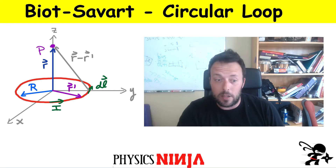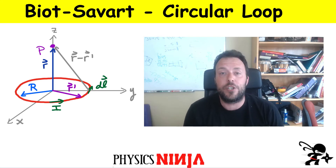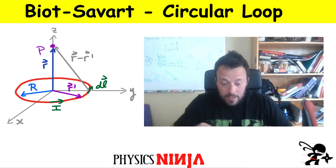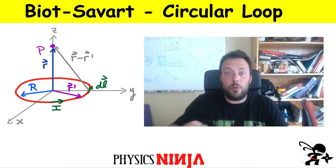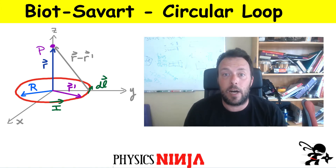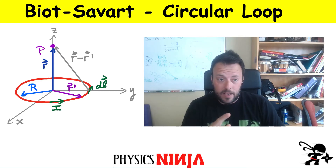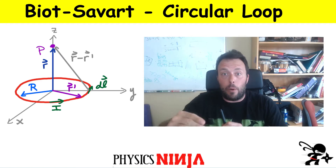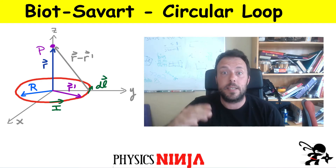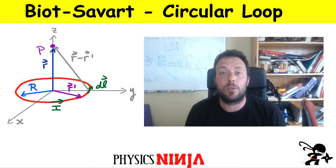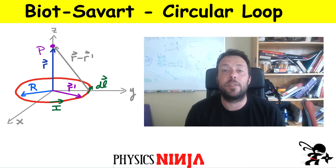I recently did the square loop, the same problem, just with a different geometry. That case is actually a little bit more complicated than this one because some elements of the square loop are farther away from the point of observation. In this case, because of the geometry, all those points on the circle are always the same distance from the point P. That makes the integral in the Biot-Savart much easier. So let's go see how we do that.